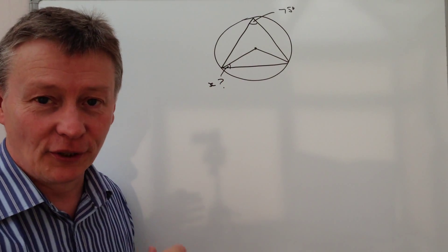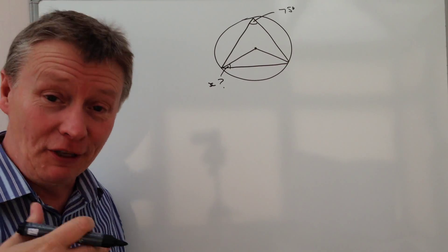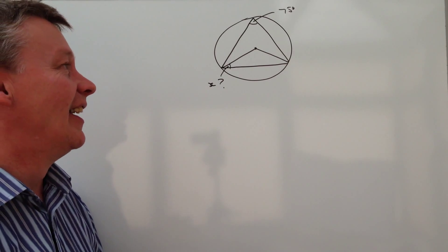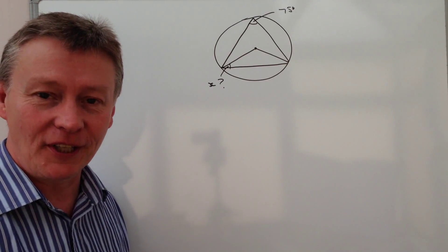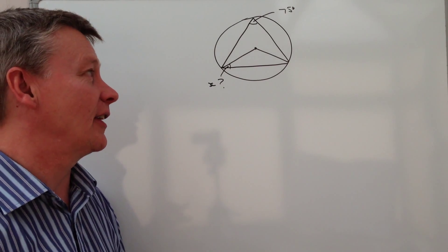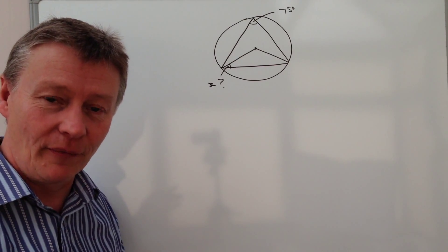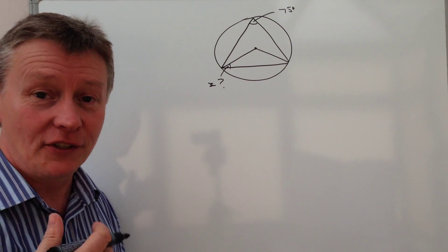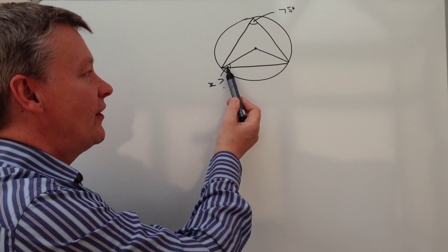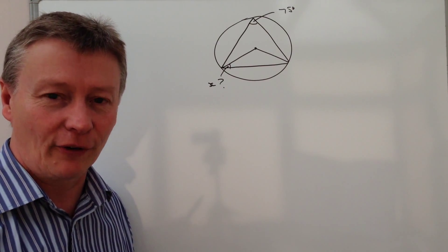Now when you first look at that you think there's really not a lot of information there, but it is one of the circle theorems that you need to be aware of. What we're actually doing is using that circle theorem to allow us to find this value here.